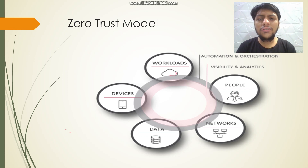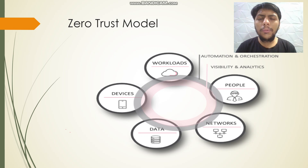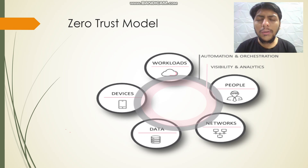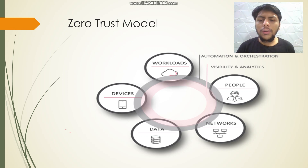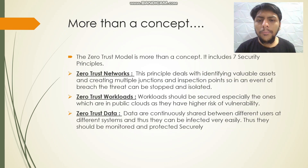Here is the Zero Trust model which includes these principles. The principles are: People, Networks, Data, Devices, Workloads, Automation and Orchestration, and Visibility and Analytics. Let us go through them one by one.